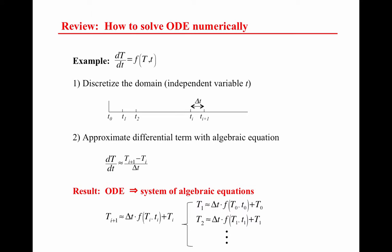The first example here is fairly straightforward. We have a first-order ODE with temperature — capital T as the dependent variable and small t as the independent variable — so just that first-order derivative equals some function of those variables. The first step in solving this numerically is to discretize the domain with the independent variable. The initial condition is the value of temperature at T-naught, and then you solve sequentially for each of those later times, discretized with an even grid delta T. You then take that differential term and approximate it as an algebraic using a simple finite difference approximation.